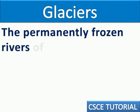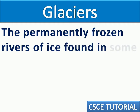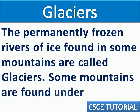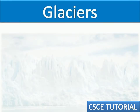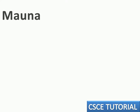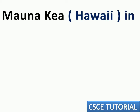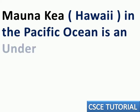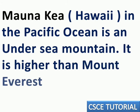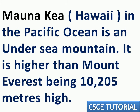The permanently frozen rivers of ice found in some mountains are called glaciers. Some mountains are also found under the sea. In the Pacific Ocean, Mauna Kea is an undersea mountain that is higher than Mount Everest, being 10,205 meters high.